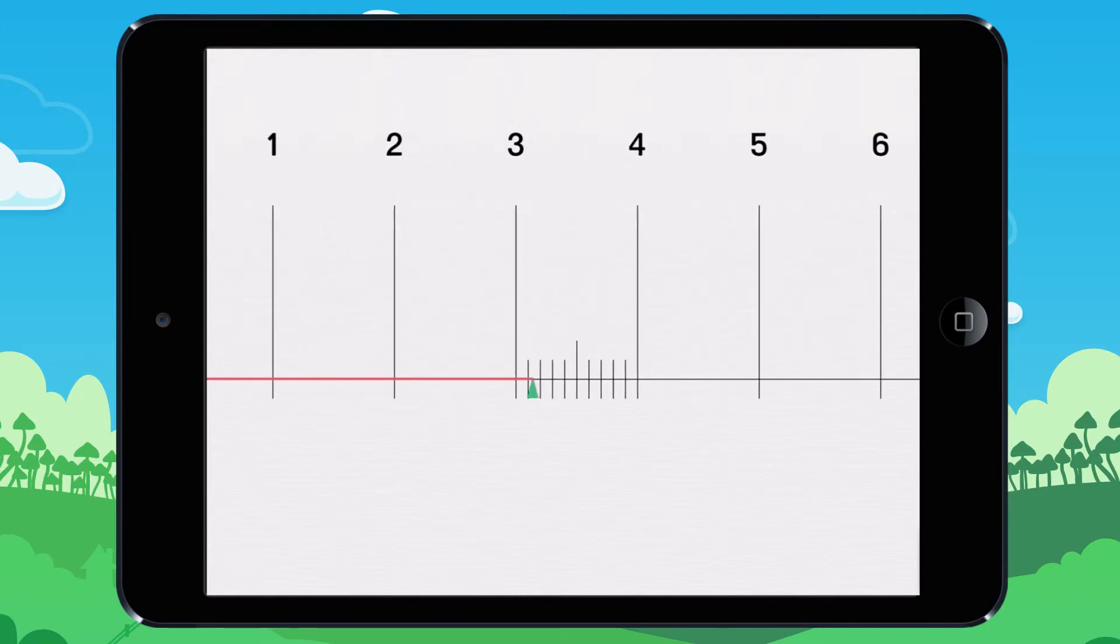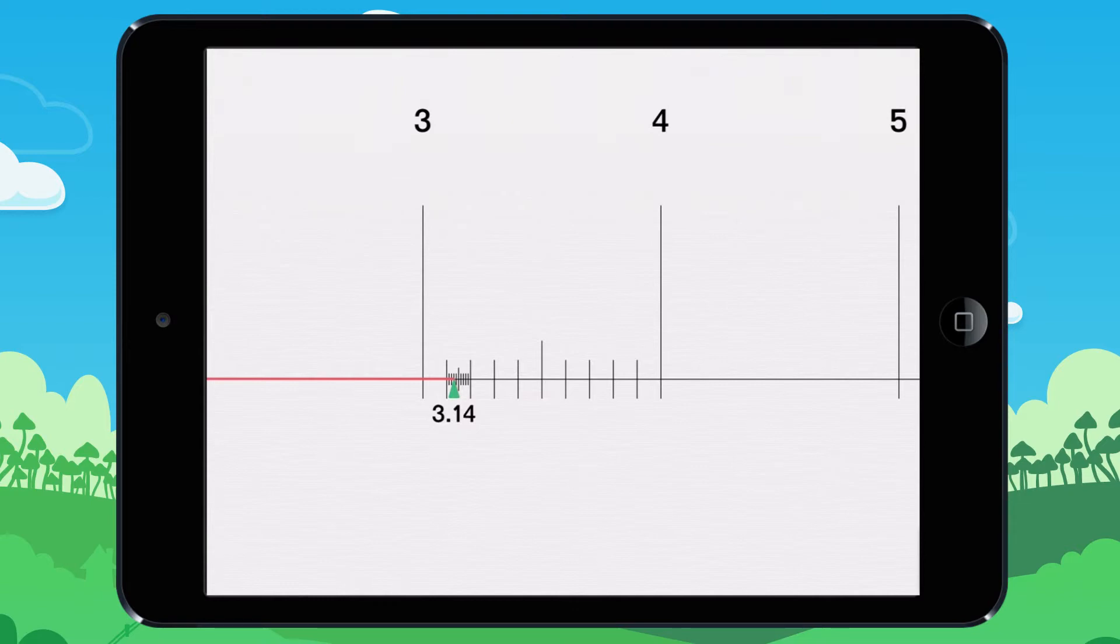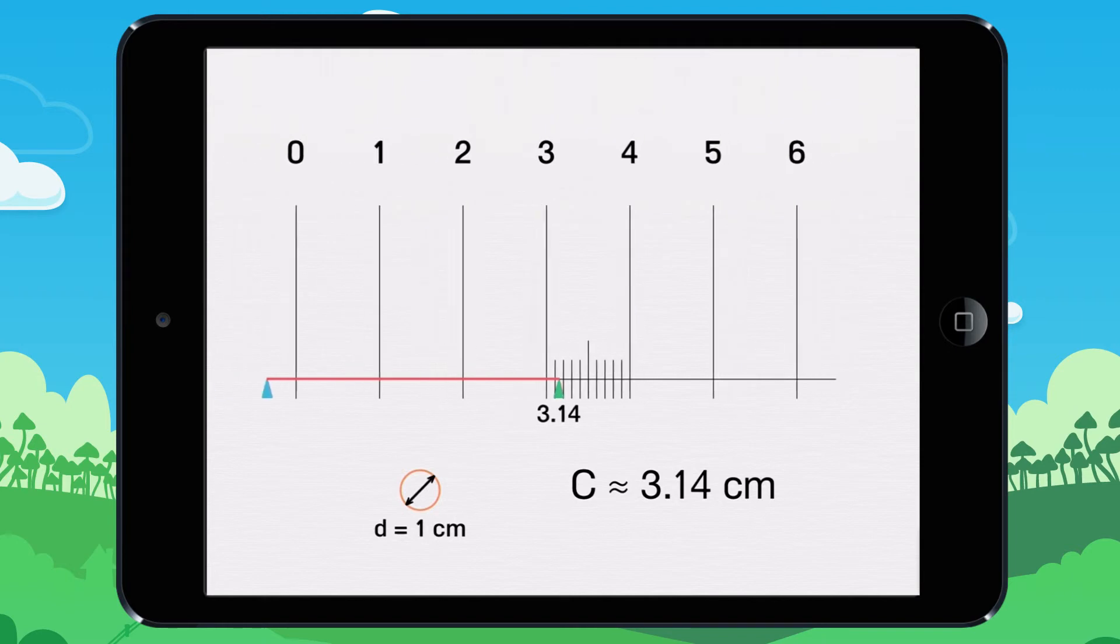Let's get closer for a better look. We can zoom in to make it easier to read. The circumference of a circle with one centimeter diameter is approximately 3.14 centimeters. This number is called pi.